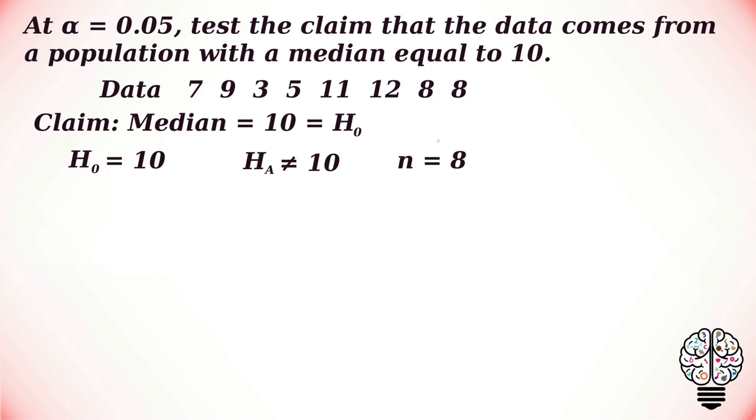Let's calculate the S value. Our S value can be calculated by finding the larger of two values: the number of values that are bigger than our hypothesized median and those that are smaller. Our data set has two values greater than 10, so Sₚ equals 2. Our data set has six values smaller than 10, so Sₛ equals 6.